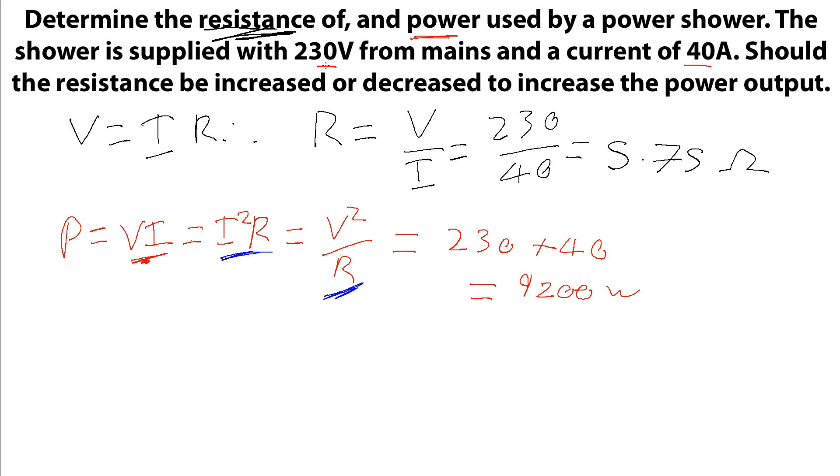So by using this one here, we can see that if the voltage is held constant at 230 volts, then let's say we reduce the resistance. So if we've got V squared over R, which is the power, if we reduce the resistance, we're dividing the voltage by a smaller number, and so the power increases.